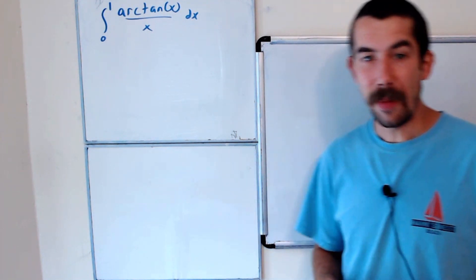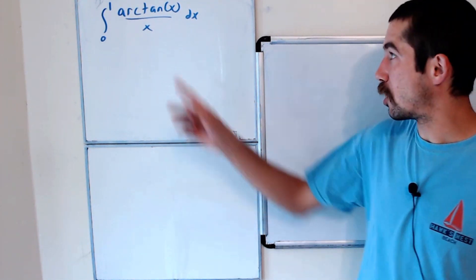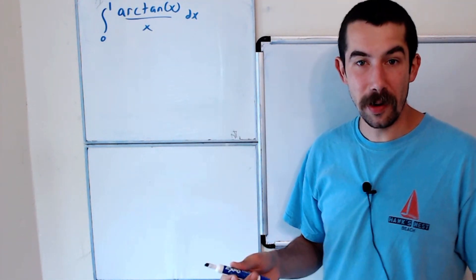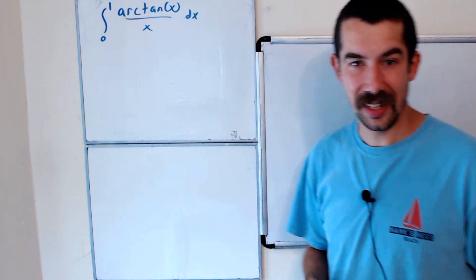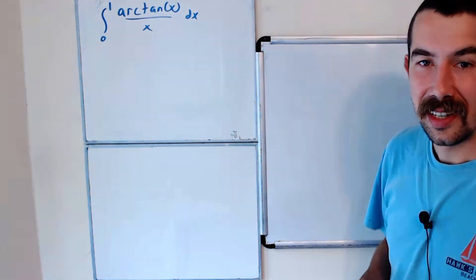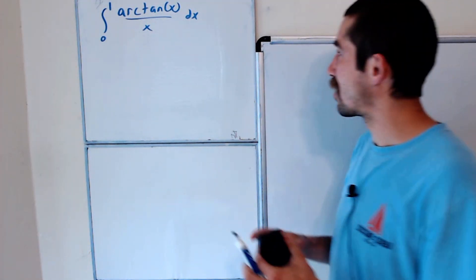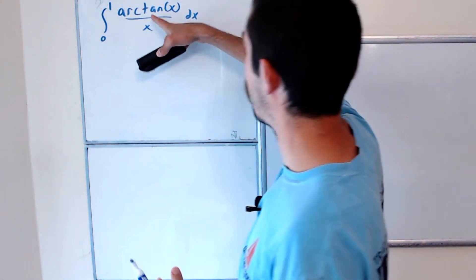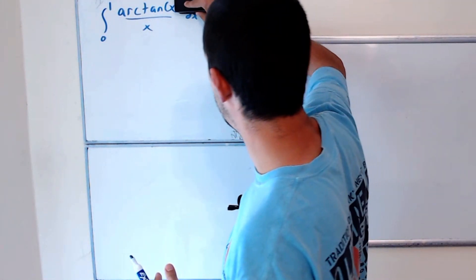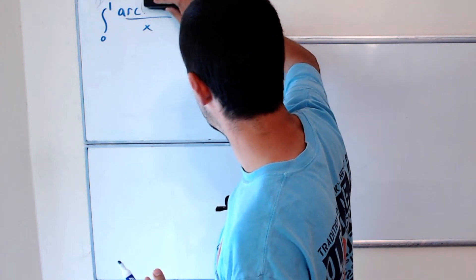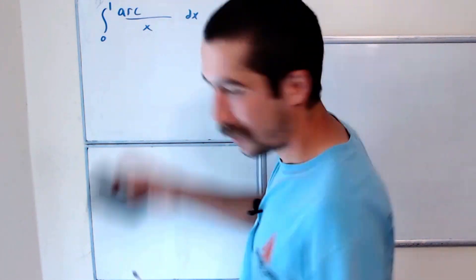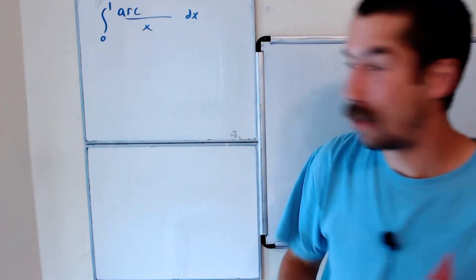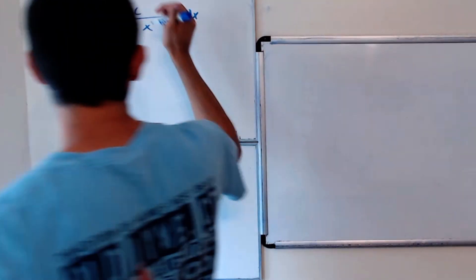Last week, I made a number of videos about this integral, which is known as Catalan's constant. Today, we're going to look at a slightly different integral. So instead of arc tangent in the numerator, let's have arc sine of x in the numerator.